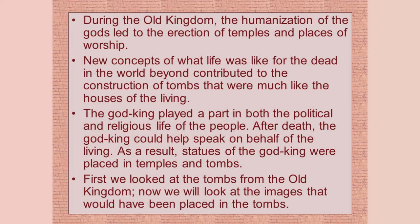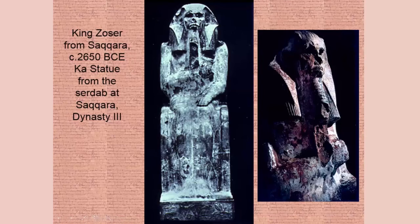Now we'll look at all the stuff they put in these tombs. Here's King Zozer — this is his Ka statue, in the Serdab at Saqqara, from the Third Dynasty. Is he not forbidding? Is he not staring out through the ages?